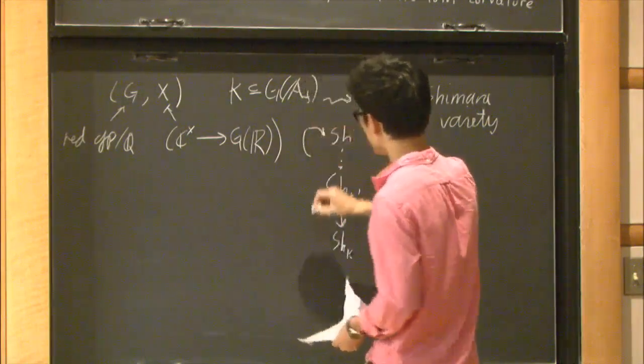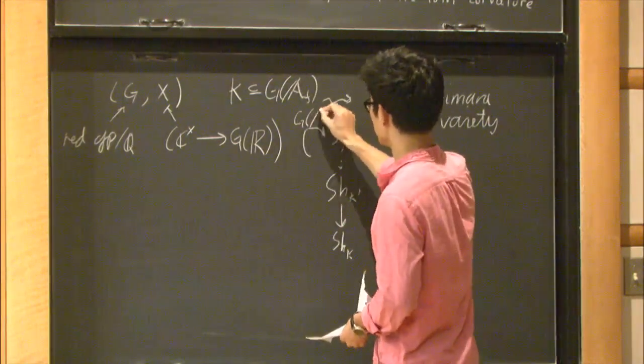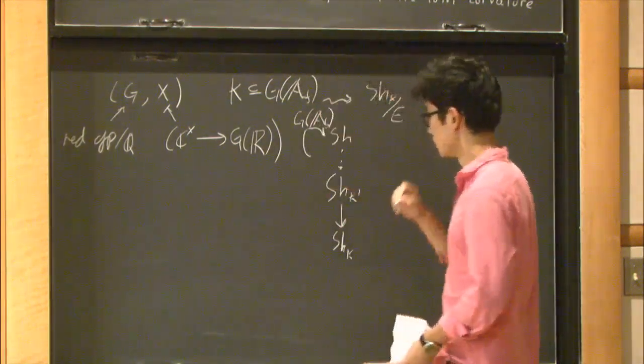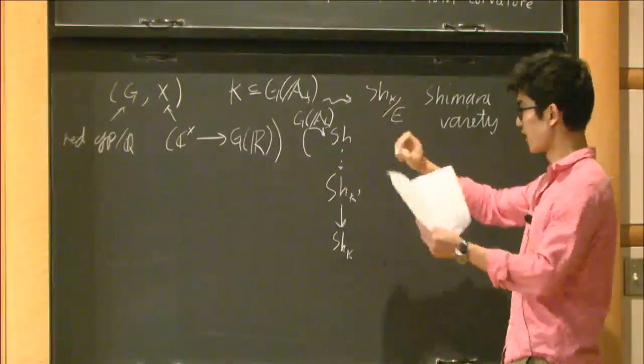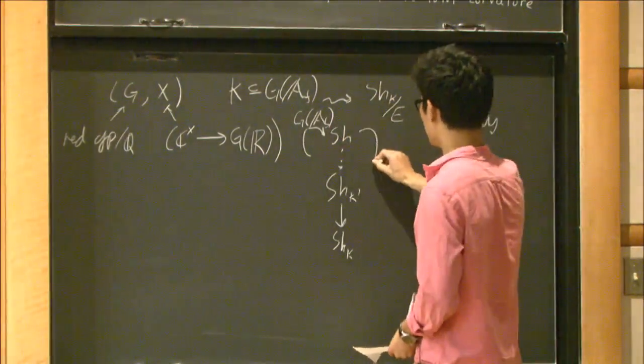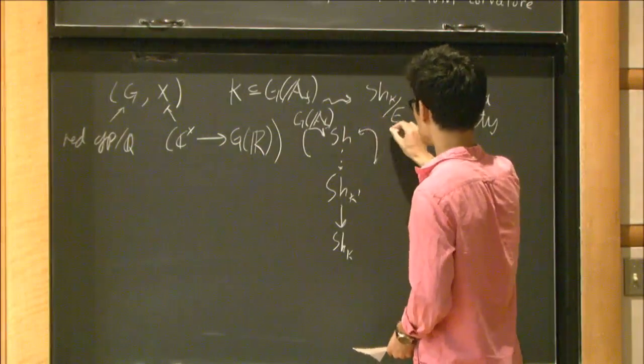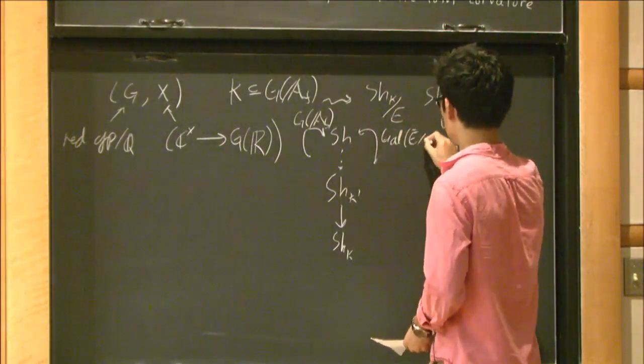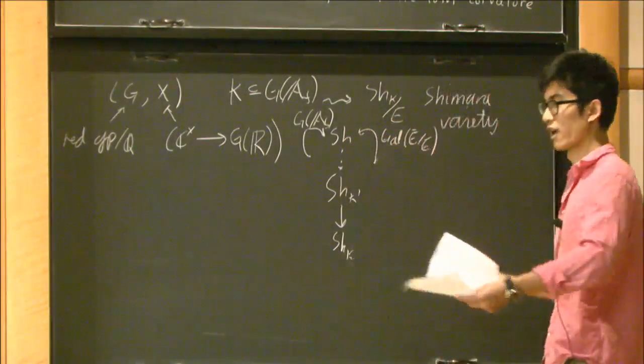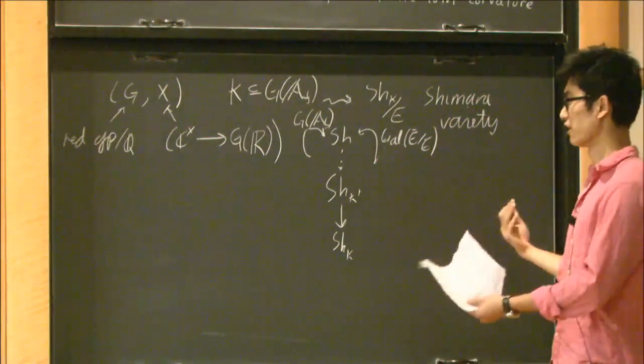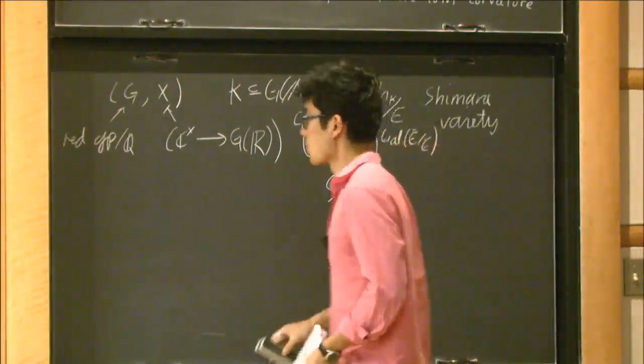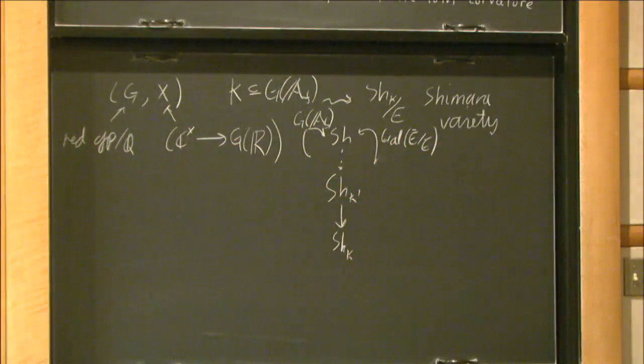On this tower, you now have an action of G of the finite points of G, and also, you have an action of the absolute Galois group of this field. And you can try and play the same game to try and relate the two sides. That's the basic motivation for Shimura varieties.